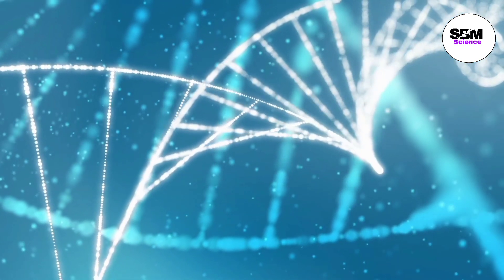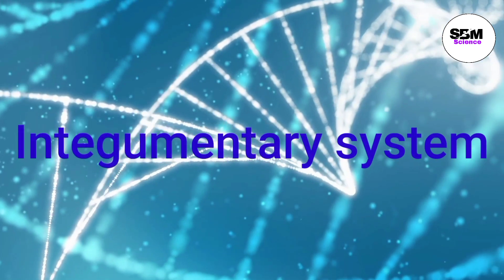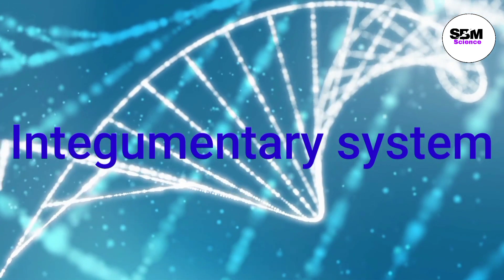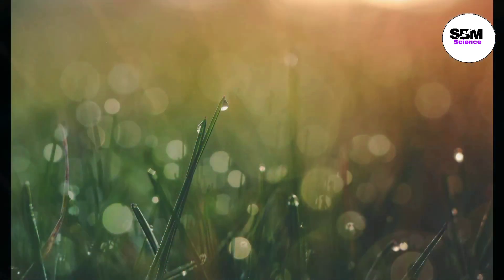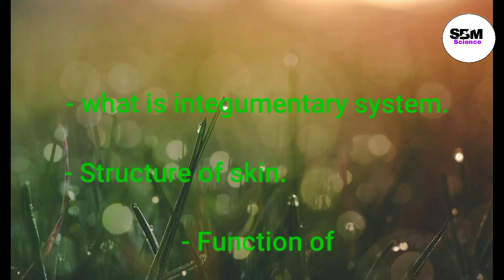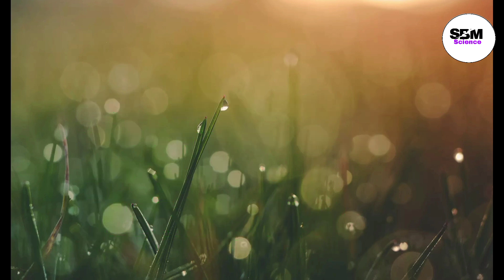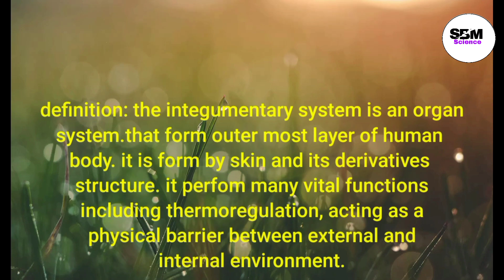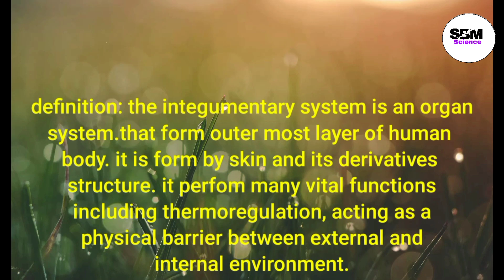In this video we are going to study in detail about the integumentary system, covering the following topics: what is the integumentary system, structure of skin, and function of skin. The integumentary system is the organ system that forms the outermost layer of the human body. It is formed by skin and its derivative structures, and performs many vital functions including thermoregulation and acting as a physical barrier between the external and internal environment.